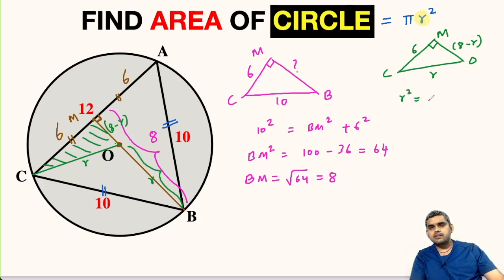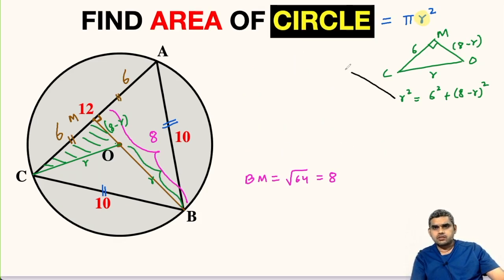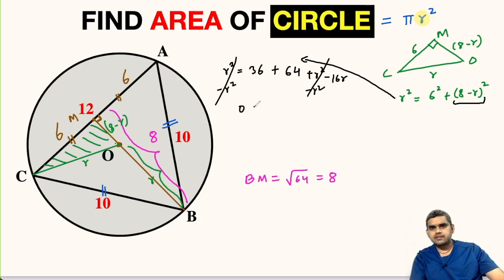So r² will be 6² + (8 - r)². Let me erase this. So this will be r² = 36 + we will expand this, so this will be 8², that is 64, + r² - 16r. So we will subtract r² from both sides. This vanishes and we will be left with 0 = 64 and 36 will sum, and it will be 100 - 16r.